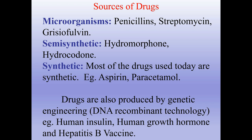Drugs are also produced by genetic engineering and DNA recombinant technology. For example, human insulin, human growth hormone, and hepatitis B vaccine.